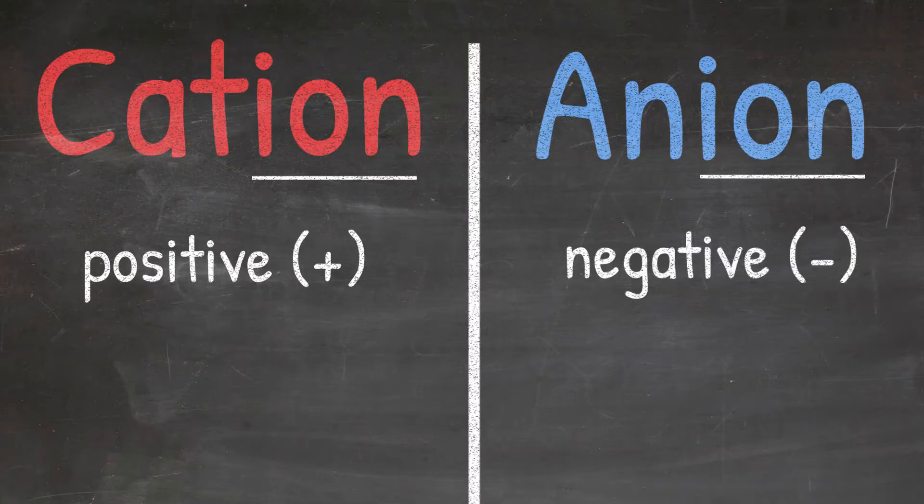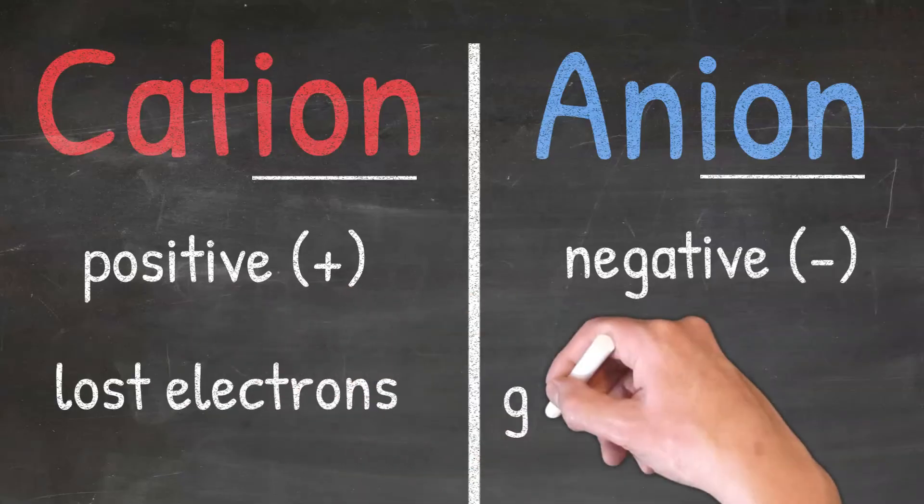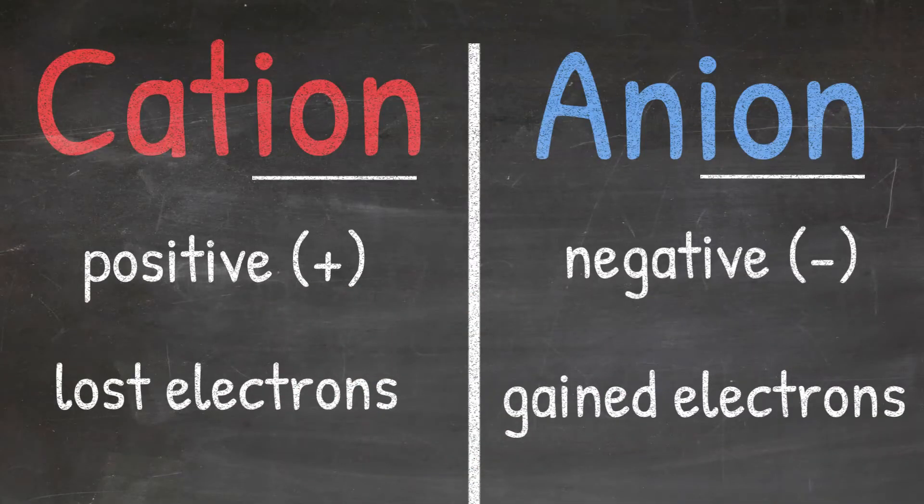One easy way to remember this is that there is a letter T in the word cation, and this looks like a plus sign. Cations are positive because they have lost electrons, while anions are negative because they have gained electrons. If you need a refresher on how to determine the number of electrons in an ion, please check out our video.